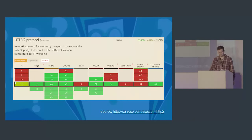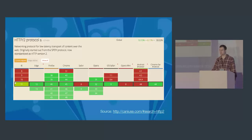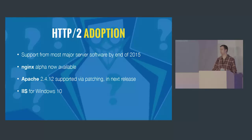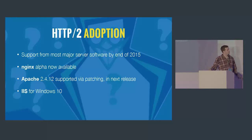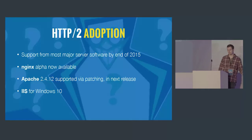When can we start using HTTP/2? In terms of browser support it's looking quite good, though all browsers are only supporting the HTTPS version. For IE and Edge we're only looking at support in Windows 10 at the moment. In terms of server support, we'll probably get support from most server software by end of 2015 — nginx has an alpha available now, Apache supports it by patching and it will be in the next release — and it's available in IIS for Windows 10. Everything is backwards compatible with HTTP/1.x.